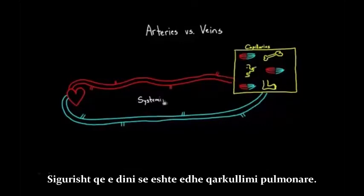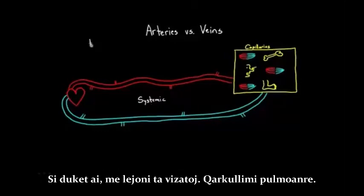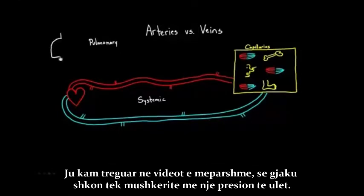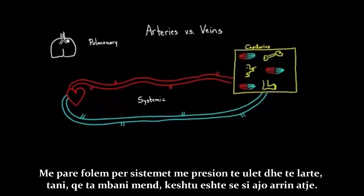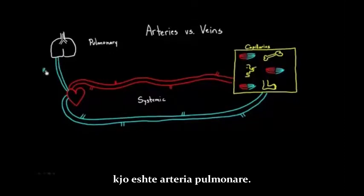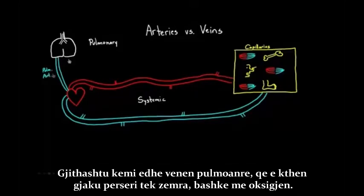Of course, you know that there's also the pulmonary circulation. Pulmonary means lungs. I've shown you previously that there is blood going to these lungs in a very low-pressure system. You have the deoxygenated blood — the blood in the blue vessels — going up like that. This would be the pulmonary artery. And we have the pulmonary vein bringing that oxygenated blood back to the heart.